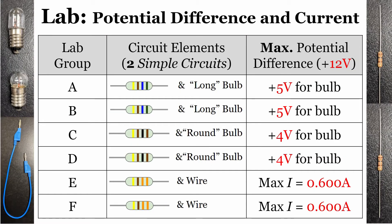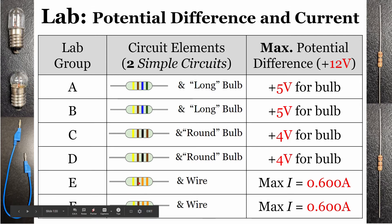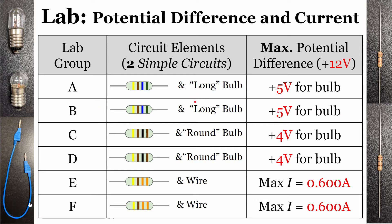Each lab group is going to do different circuit elements. Groups A and B will both be doing the experiment for a circuit element called a resistor — it has color bands on it — and also for a long bulb. Groups C and D will use a different color-coded resistor and do it for a round bulb. Groups E and F will have another different color-banded resistor and will also find the relationship between potential difference and current through just a wire. Each lab group will be doing two different experiments, one for each of the two circuit elements assigned.